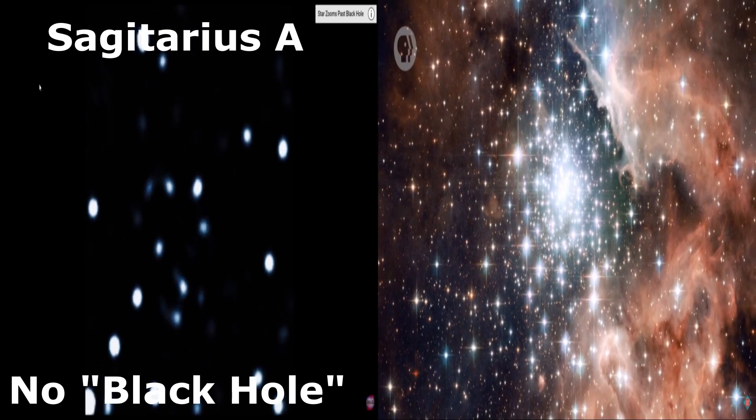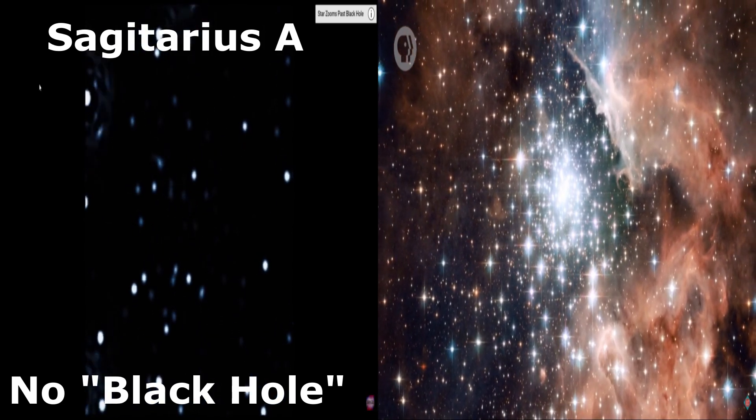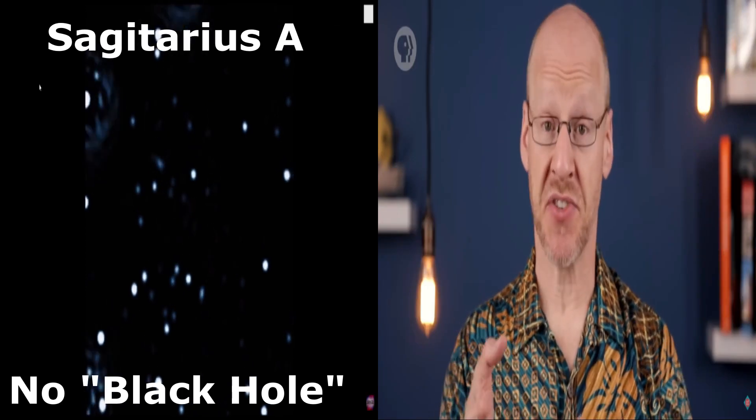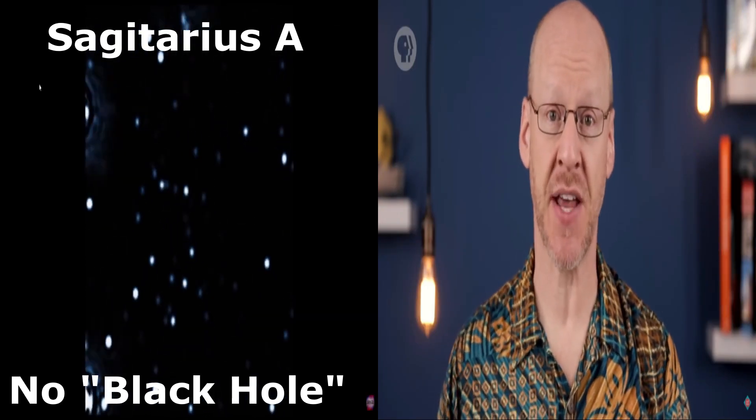in a cluster, all the stars contribute to the overall gravity, so there's more general gravitational schmear. The stars all orbit the cluster's center of mass, even though there may not be anything at the very center.